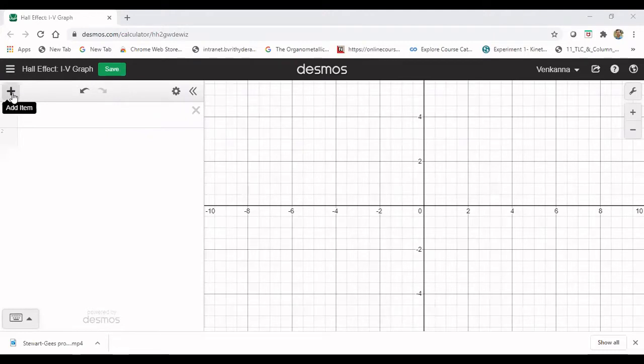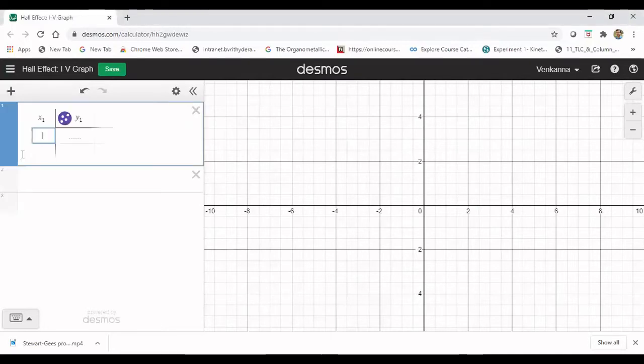To get started, click on add item and select the table. You will have x-axis and y-axis values. For present experiment that is Hall effect, I choose x-axis per current and y-axis per voltage. Let us start to enter the values on x-axis.